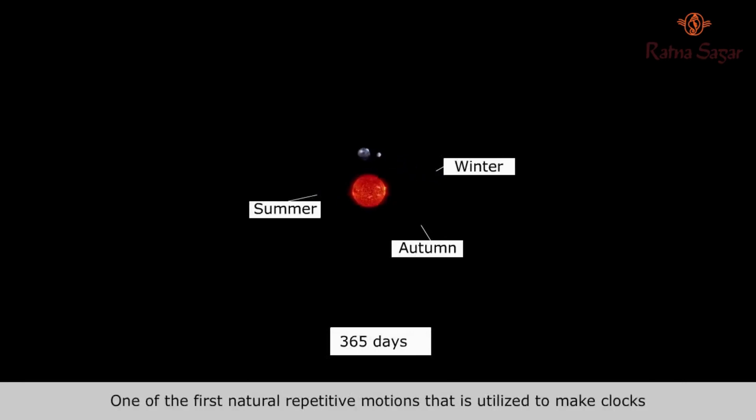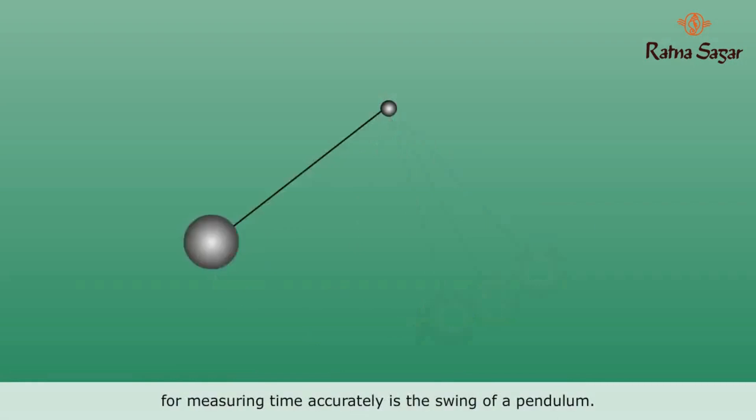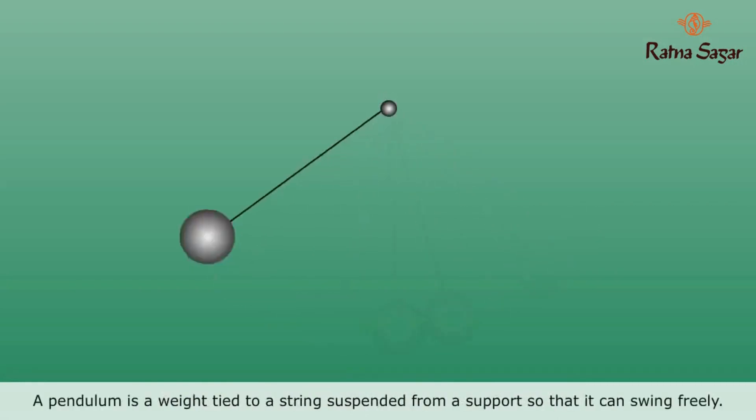One of the first natural repetitive motions that is utilized to make clocks for measuring time accurately is a swing of a pendulum. A pendulum is a weight tied to a string suspended from a support so that it can swing freely.